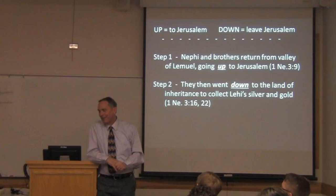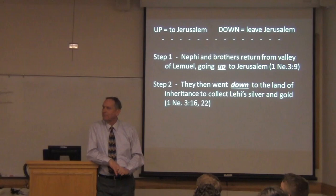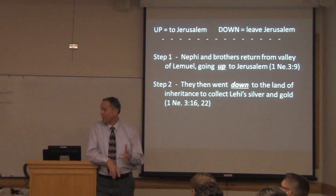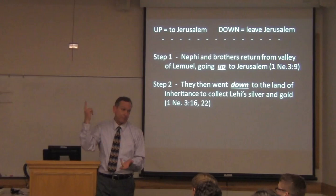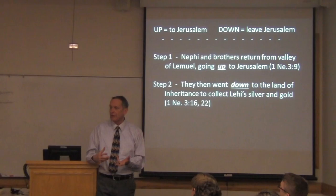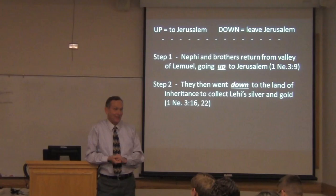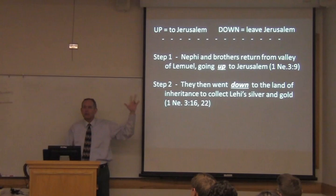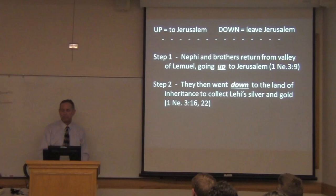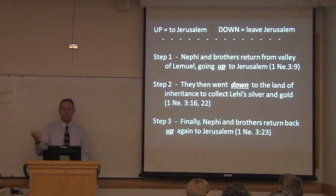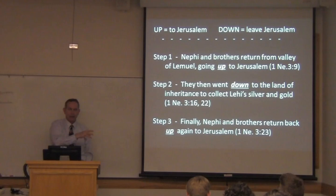Lehi, however, knew that Jerusalem was endangered. So he doesn't seem to have hidden his gold and silver underneath the floor of his house. It's clear that in the context of 1 Nephi, the gold and silver is not at his house in Jerusalem, but it's way away from the city Lehi knew would be destroyed — hidden safely, maybe beneath the roots of an olive tree, in the land of his inheritance. And so Nephi and Laman and Lemuel and Sam go, get this, and return to Jerusalem to see if they can buy the plates. And what does the text say when they return from the land of inheritance? They go back up again to the land of Jerusalem.